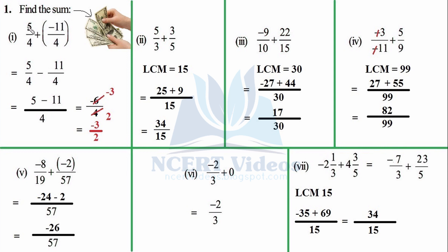We are going to add 5/4 plus (−11/4). You have learned in previous classes that first you have to open the bracket. In later classes you can do it in your brain, but in the first question we will explain it in depth. So: 5/4 + (−11/4) becomes 5/4 − 11/4.